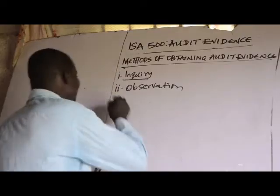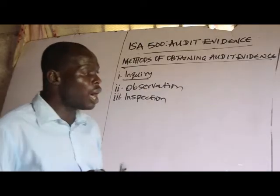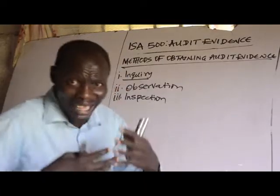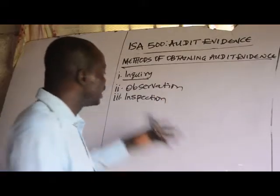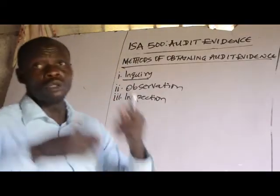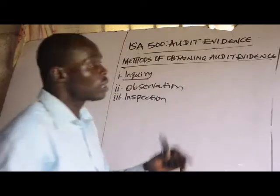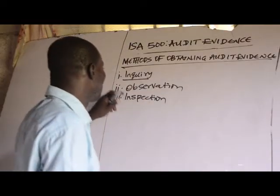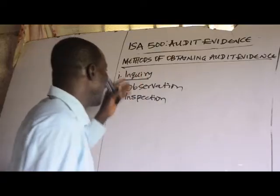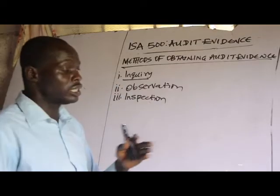Number three is inspection. To inspect something means to examine it. Inspection is the examination of records, documents, or tangible assets. When you examine the documents, the records, or the asset register of an entity, that process is said to be inspection. It is one of the methods that an auditor uses to obtain evidence.